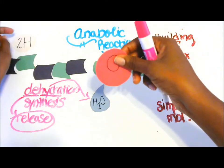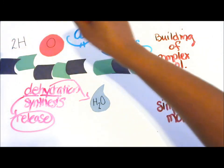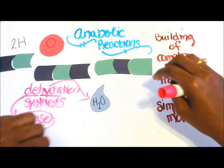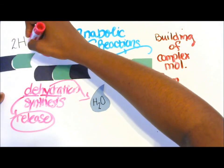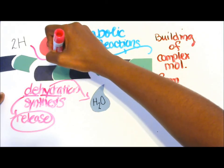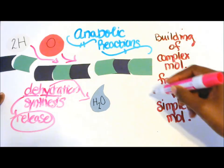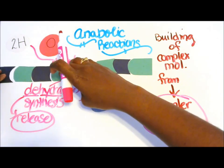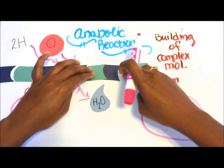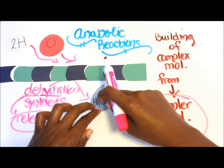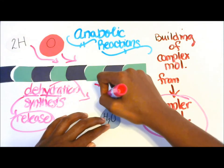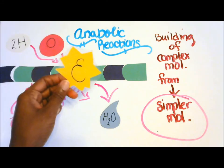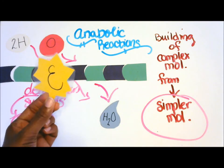So we have two hydrogens and we have our oxygen — our simple molecules. When hydrogen and oxygen meet our simpler molecules and the anabolic reaction proceeds, we get our complex large molecule. This will result in our large molecule and water. Now, where does energy come in in anabolic reactions?